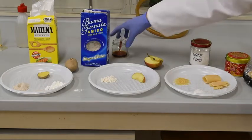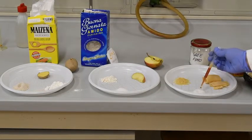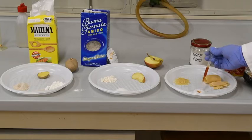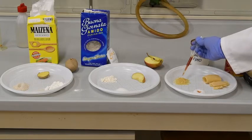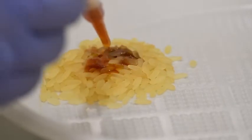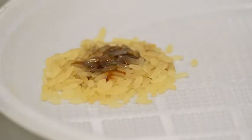Adesso andremo a mettere qualche goccia del nostro reagente su ciascuno di questi alimenti che abbiamo preparato e dovremo osservare se non succede niente, ovvero sia il liquido rimane bruno, rossiccio, oppure se si sviluppa una colorazione nera. Questo è indice della presenza di amido nell'alimento.